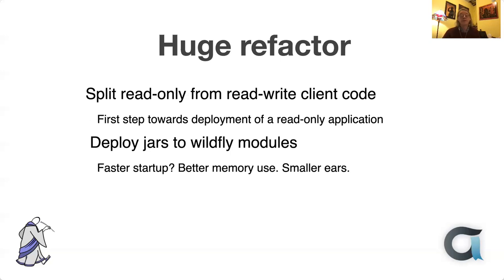Recently I carried out a huge refactoring of the system — something I'd been intending to do for a while. The idea is to split all the read-only code from the read-write code, which I did for the client. The goal is to deploy a read-only application with the smallest amount of code. I also rearranged the deployment process, making use of Wildfly modules. Anybody familiar with Wildfly knows they have shared classes inside a module system — it's not the Java module system, it's rather different. I hope this will lead to faster startup, better memory use, and smaller WAR files, because the WAR files essentially have nothing in them — it's all deployed into the modules.